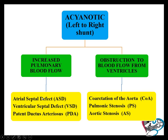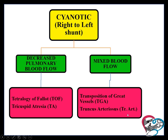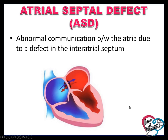Acyanotic conditions with left-to-right shunt and increased pulmonary blood flow include: atrial septal defect (ASD), ventricular septal defect (VSD), and patent ductus arteriosus (PDA). Obstruction to blood flow from the ventricle includes: coarctation of the aorta (CoA), pulmonary stenosis (PS), and aortic stenosis (AS). Cyanotic conditions with decreased pulmonary blood flow are tetralogy of Fallot and tricuspid atresia. Mixed blood flow conditions are transposition of the great arteries and truncus arteriosus.